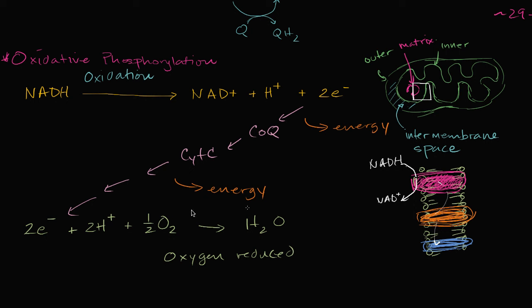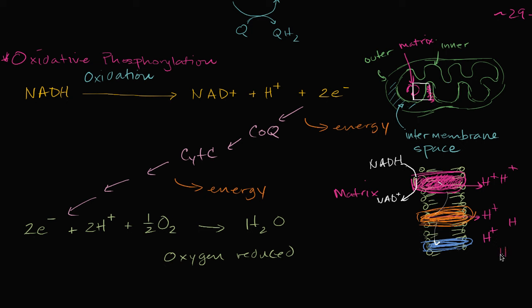And as that energy is released, that energy is used to pump hydrogen protons from the matrix — this is where our citric acid cycle occurs — so we have protons being pumped out as we release energy, as we go from one electron acceptor to another electron acceptor. The electrons are going from higher energy states, and they're releasing energy as they go towards more and more electronegative things. They feel more comfortable with the water than they felt with the NADH. And by doing so — by these electrons going down that gradient, from a higher energy state to a lower energy state — we are creating this proton gradient. The concentration of protons on the right side of this membrane, in the intermembrane space, is building up.